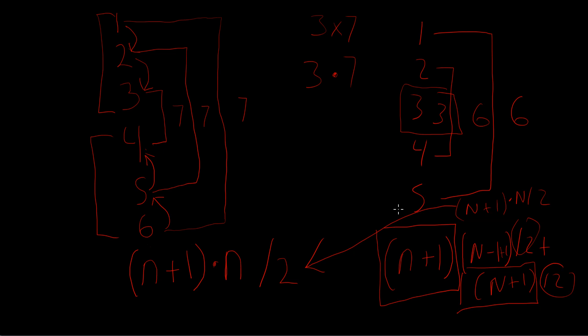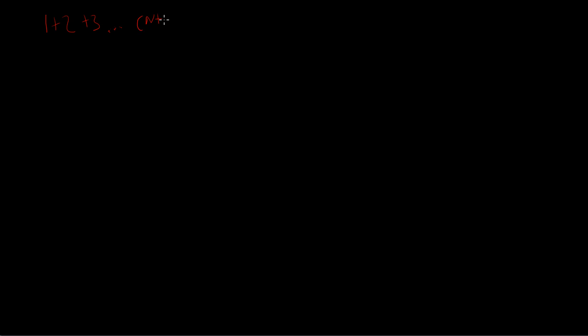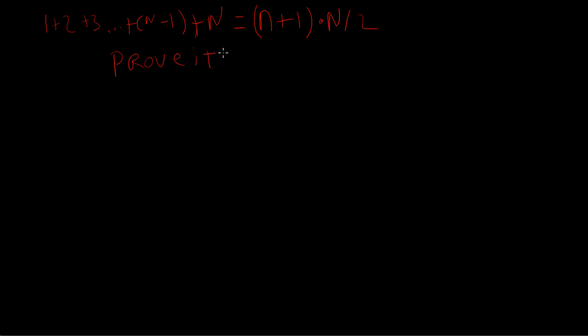So this is our assertion: if you have 1 plus 2 plus 3 all the way through n, and you add all of these together, then you're going to get n plus 1 times n divided by 2. And we want to prove this. To do that, we use mathematical induction. There are two steps.